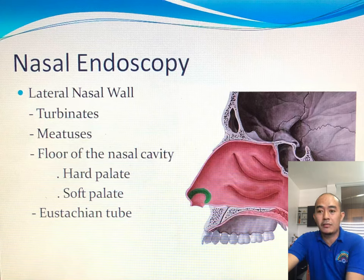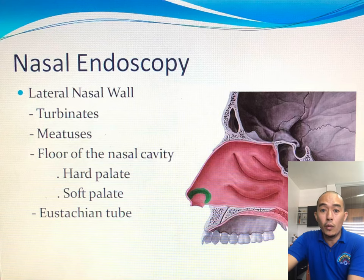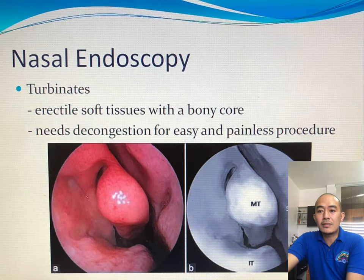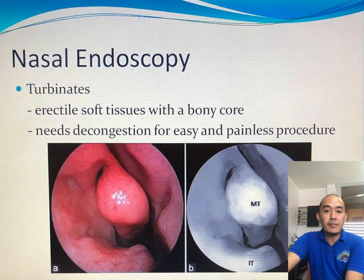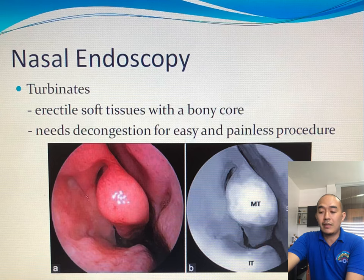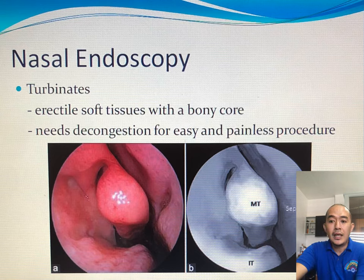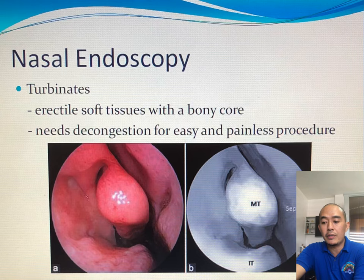The nasal floor is made of the hard palate anteriorly and the soft palate posteriorly. More posteriorly, we can see the eustachian tube opening. Turbinates are erectile soft tissues with a bony core. Only the soft tissue component enlarges, never the bony core. Decongestion is applied for easy insertion of scopes atraumatically so they shrink, giving more room in the nasal cavity. There are three different turbinates: the inferior, middle, and superior turbinate.